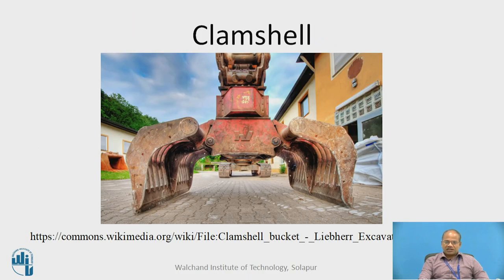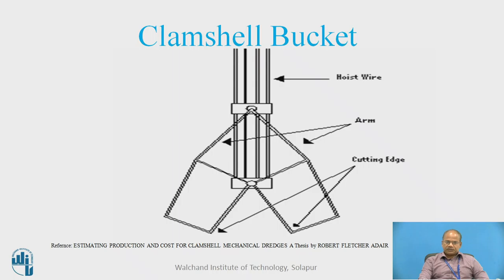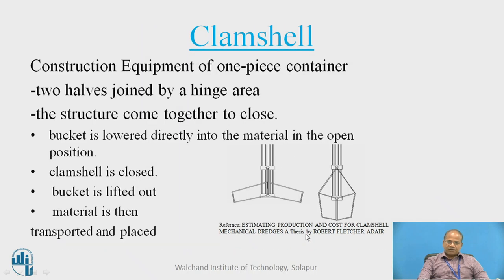You can see this giant machine. It is a part of the machine which is also called as the clamshell bucket. It works in a very simple manner. There is a hoist wire at the top, there are arms and there are cutting edges which are placed down at these locations. The clamshell is a construction equipment of one piece container. It consists of two halves joined by a hinge area, and the structure comes together to close.